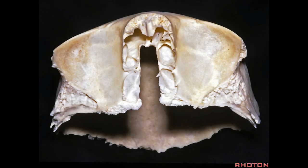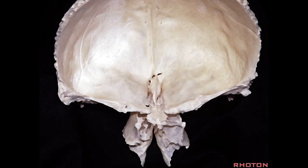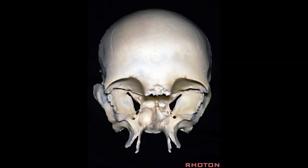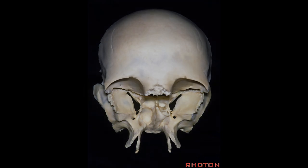The frontal bone roofs the ethmoid air cells lateral to the cribriform plate—lateral to the ethmoidal notch where the cribriform plate sits. Here's the view from below, and here's the view from above, and the cribriform plate fits in this area. The ethmoid air cells are roofed by the frontal bone lateral to this ethmoidal notch. We'll continue building the skull base: we put frontal bone with sphenoid and add in the ethmoid.